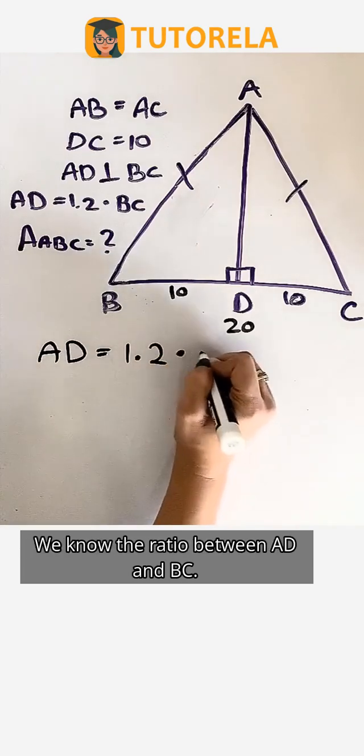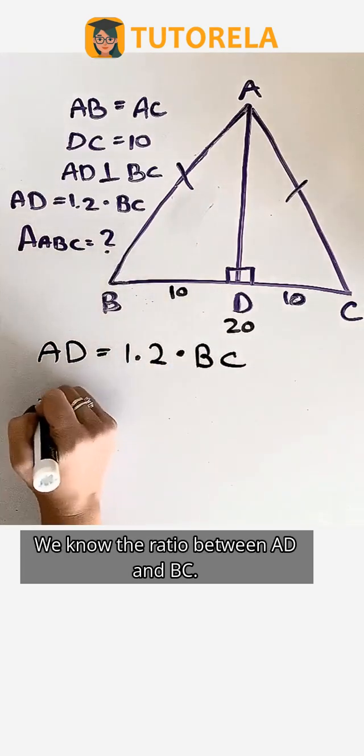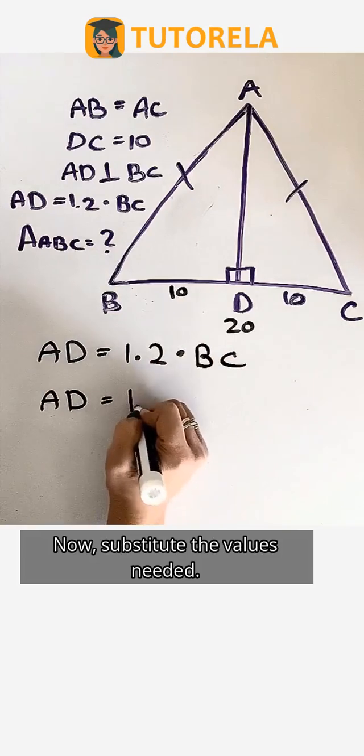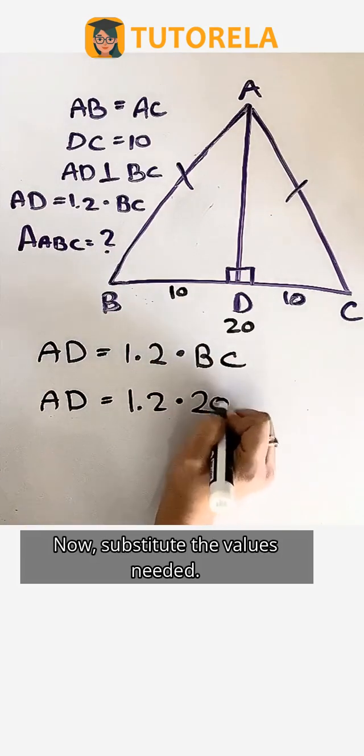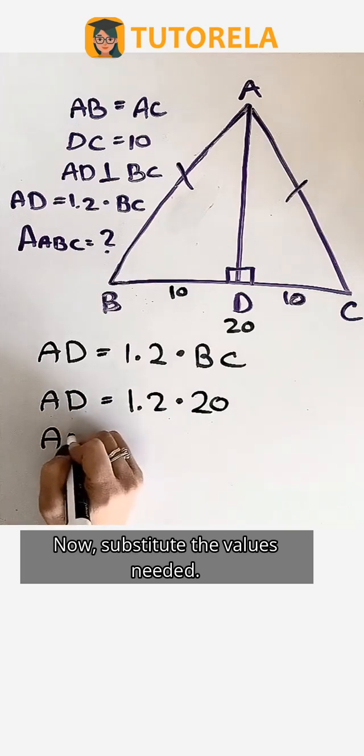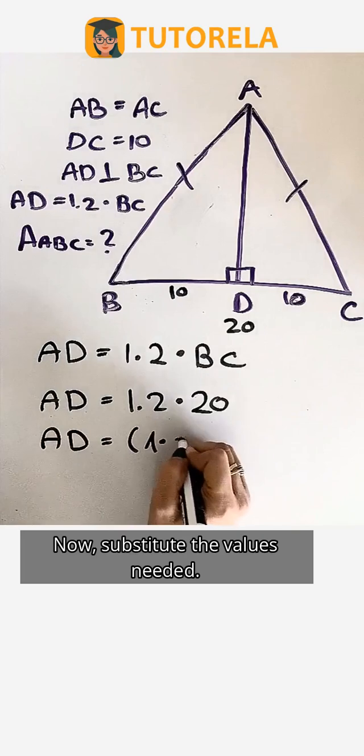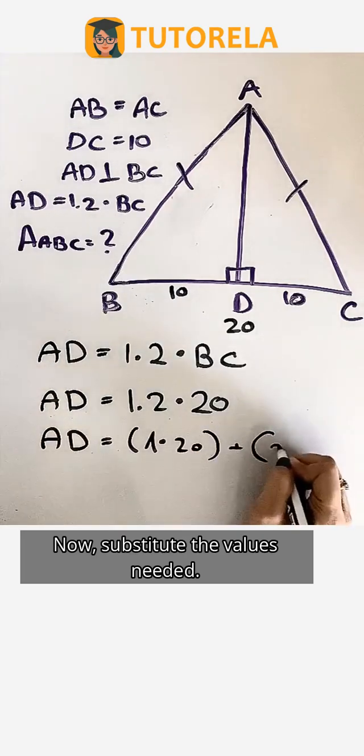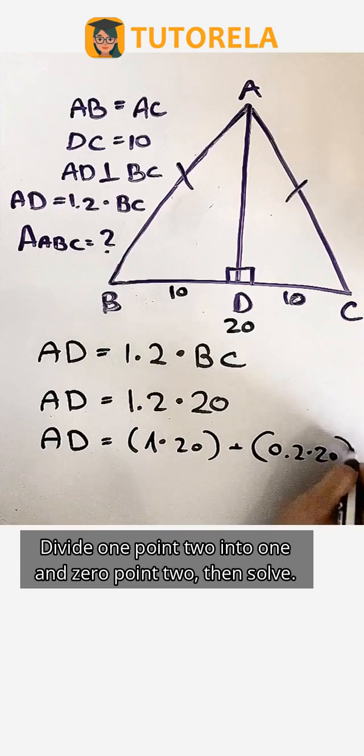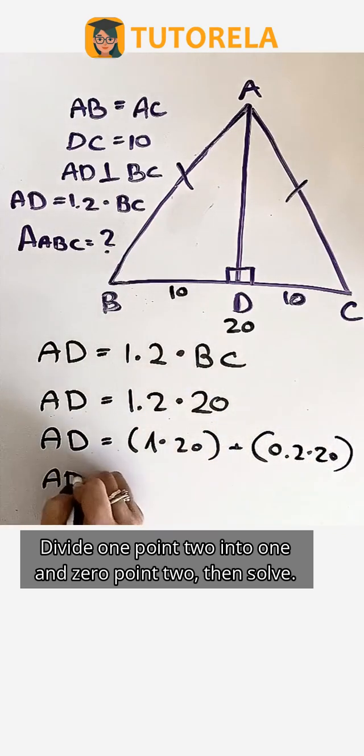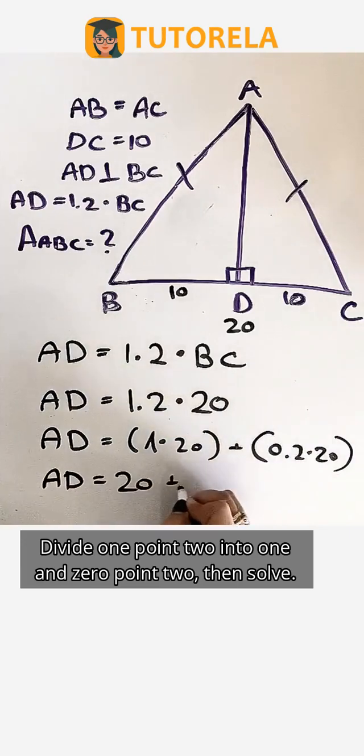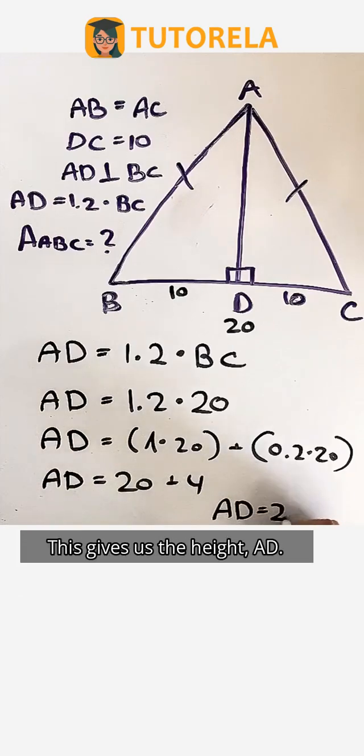We know the ratio between AD and BC. Now substitute the values needed. Divide 1.2 into 1 and 0.2, then solve. This gives us the height AD.